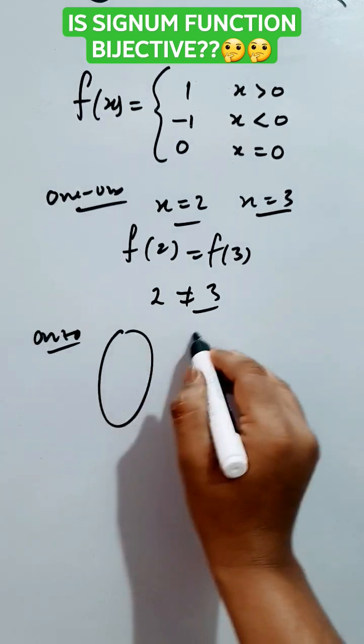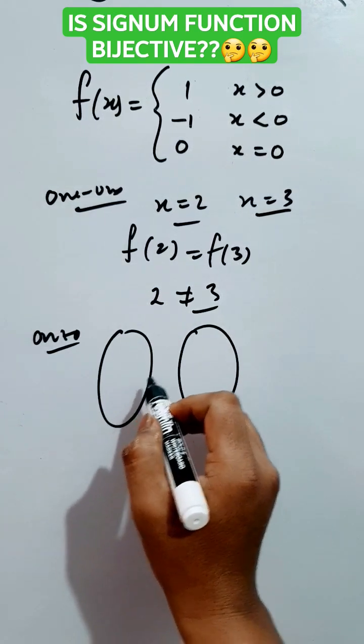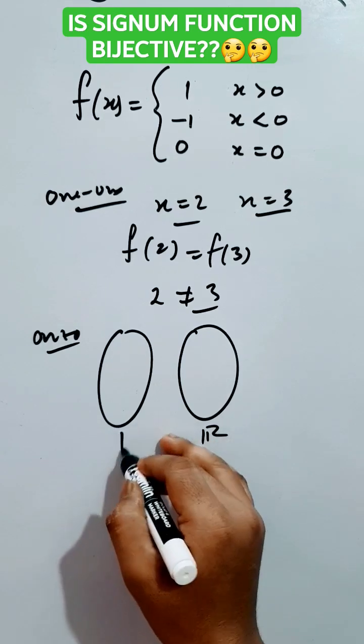Now, in case of onto, let's check the function criteria. Here it is R to R function.